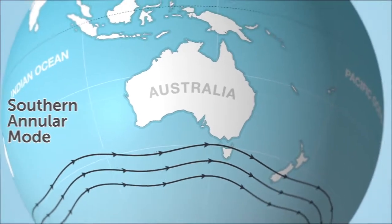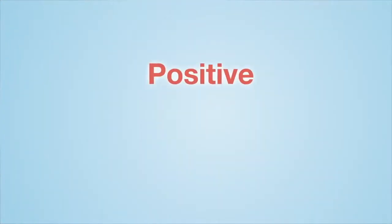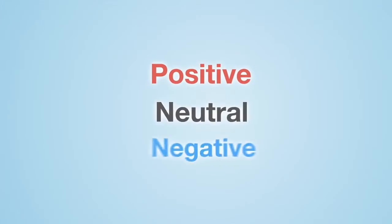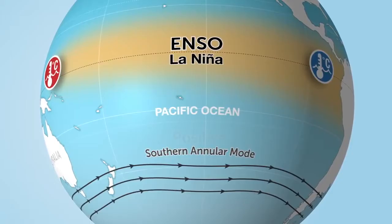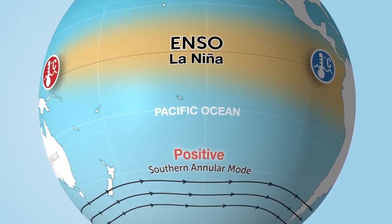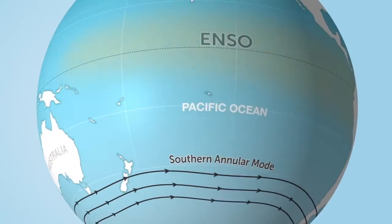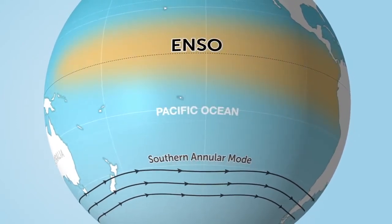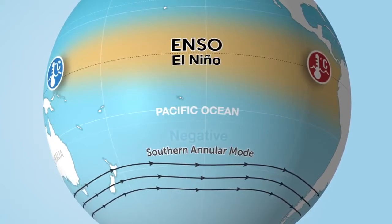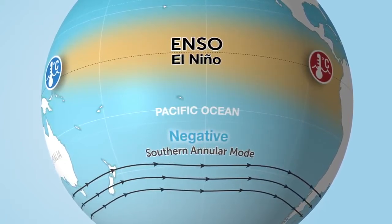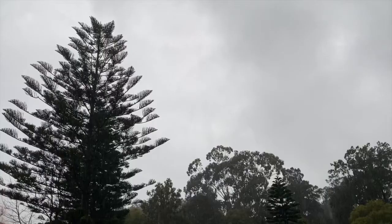The SAM is measured as an index. It can be neutral, positive, or negative. When the SAM index is positive, the belt of westerly winds strengthens and contracts towards Antarctica. Conversely, this westerly wind belt becomes weaker and moves northwards away from Antarctica during a negative phase.